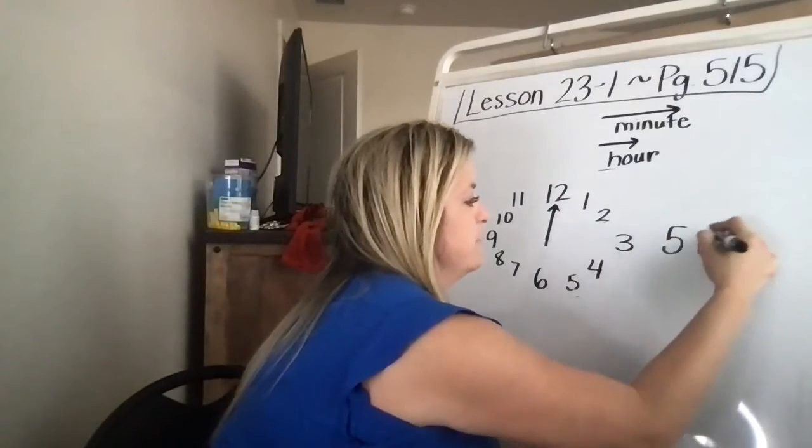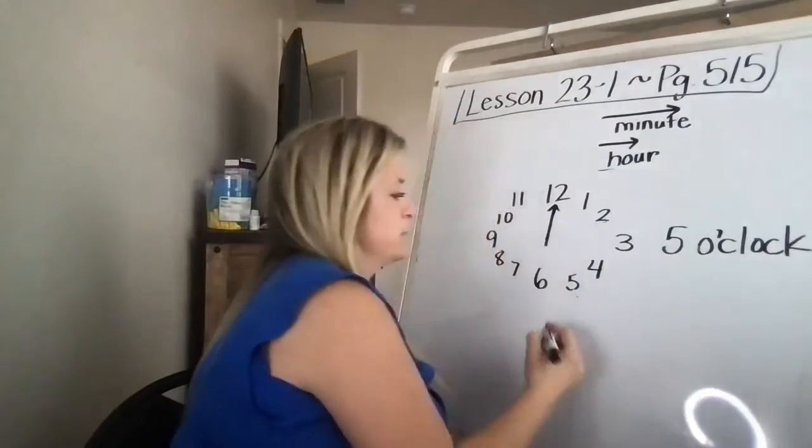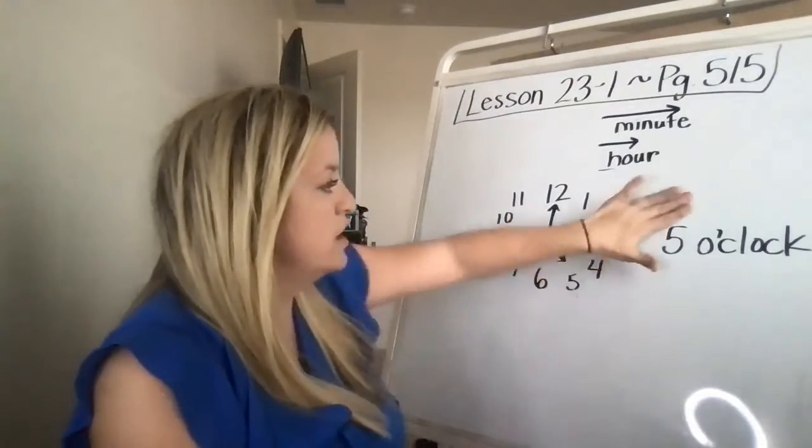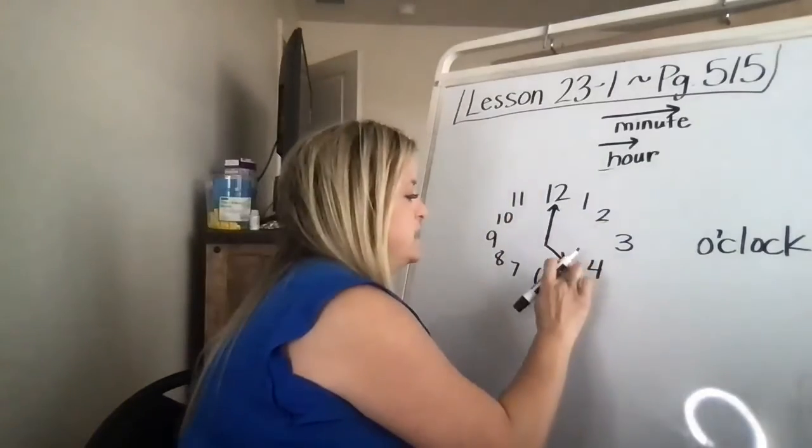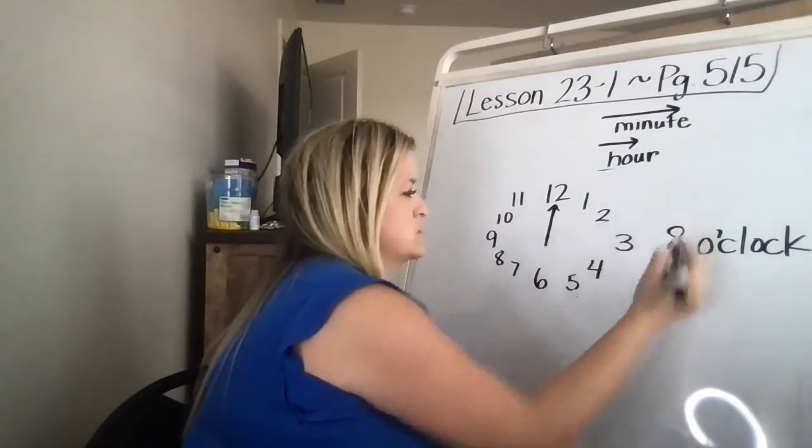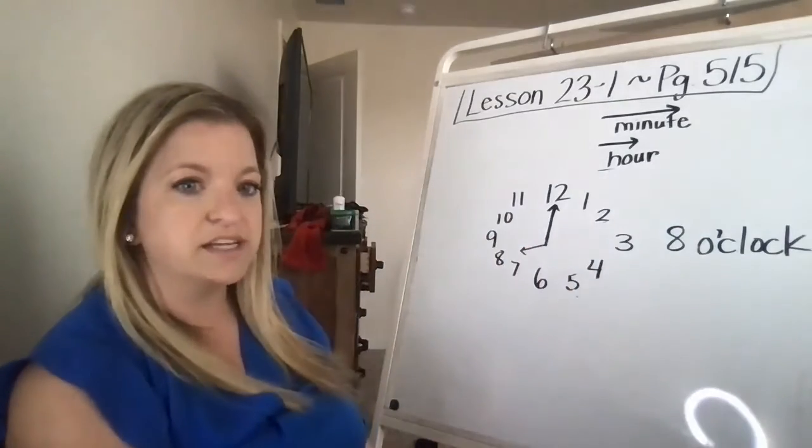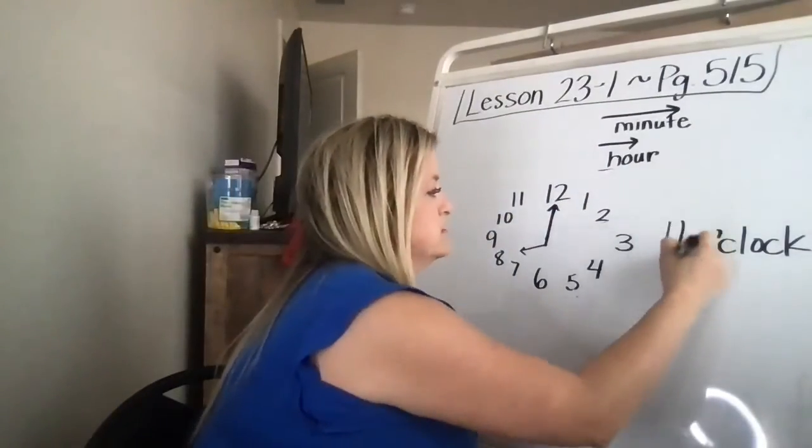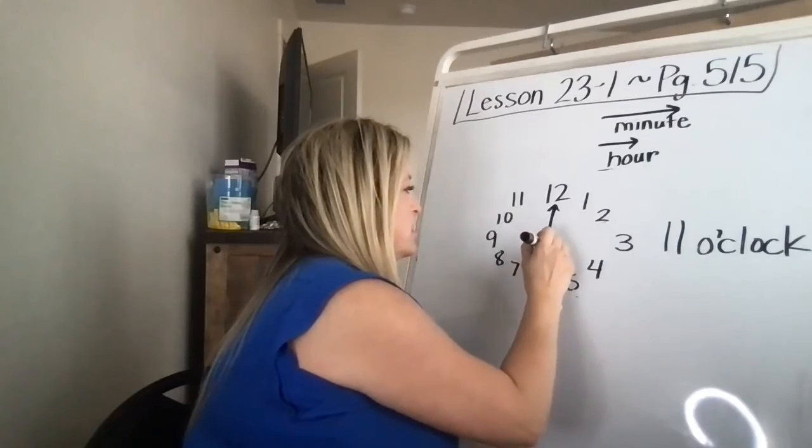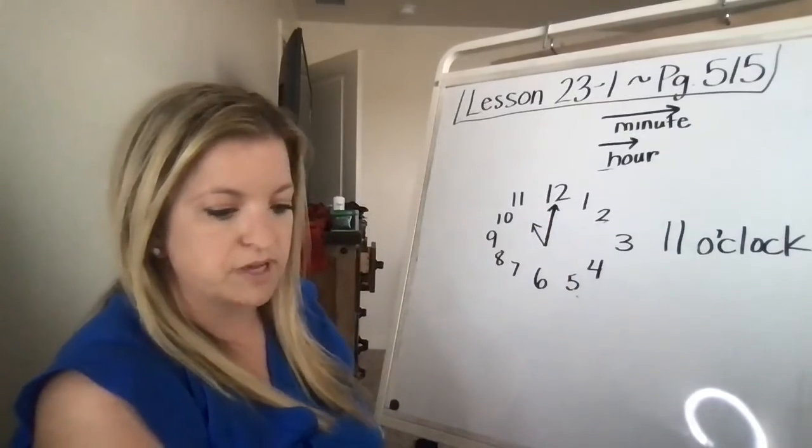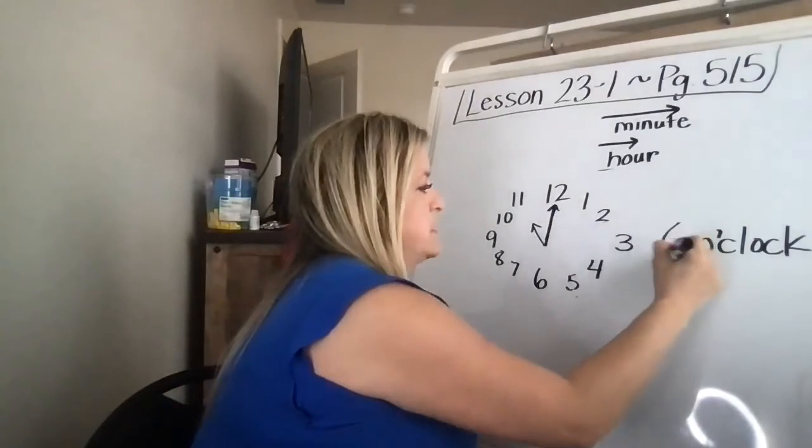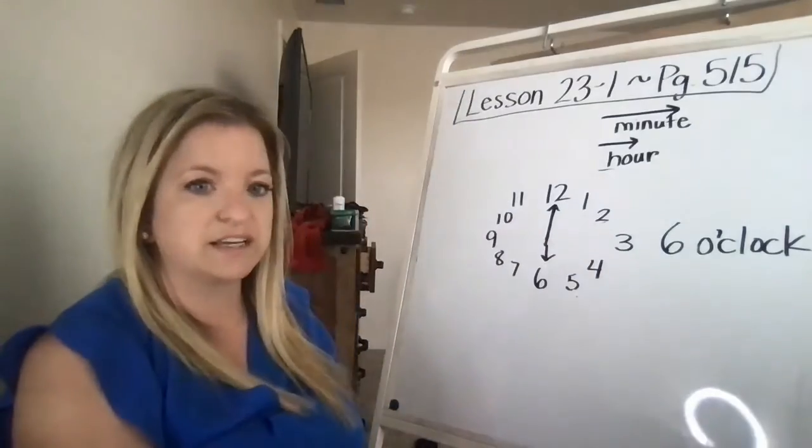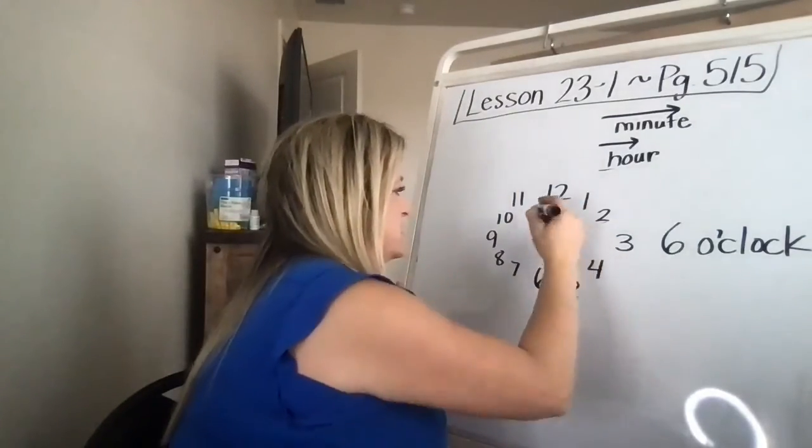So the first one I'm going to do is five o'clock. And I'm going to draw my little hour hand to the five. There's five o'clock. The next one they want us to do is eight o'clock. So I'm going to do a little hand pointing to the eight. Now I have eight o'clock. The next one they want me to do is 11 o'clock. And there's my little hand going toward the 11. The next one they want is six o'clock. So I'm going to take my little hand and draw it down to the six. It should actually be just one straight line if it's at six o'clock.